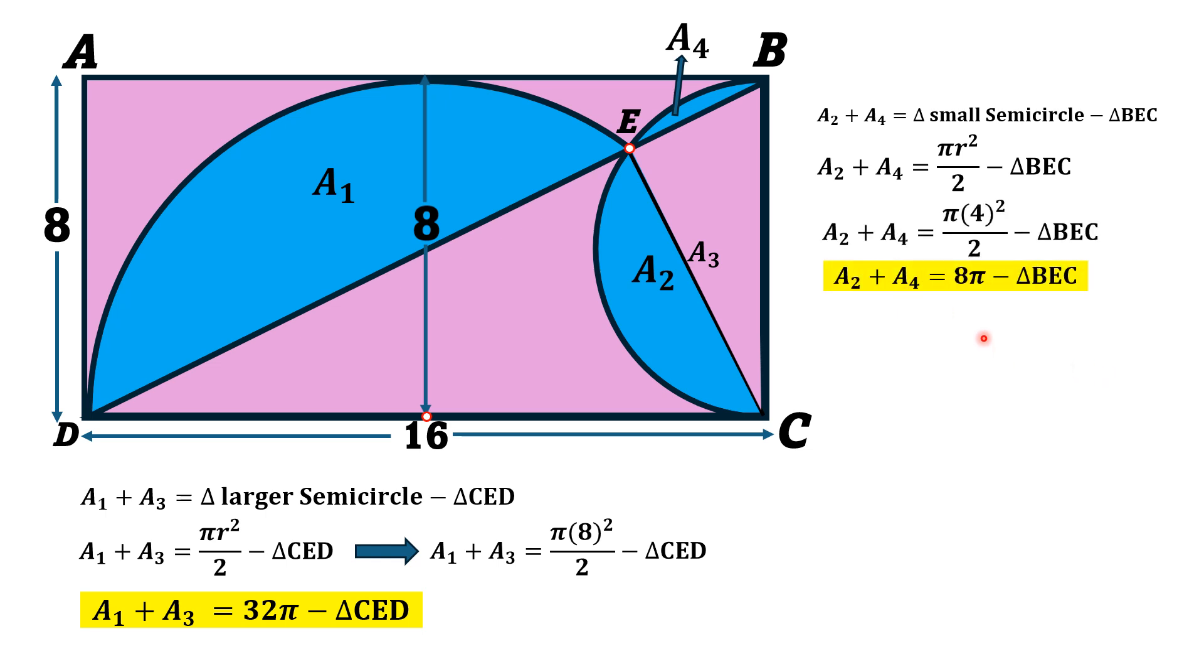We add up these two equations to find the area of all 4 blue shaded portions. So A1 plus A3 plus A2 plus A4 equals 32π minus area of triangle CED plus 8π minus area of triangle BEC.